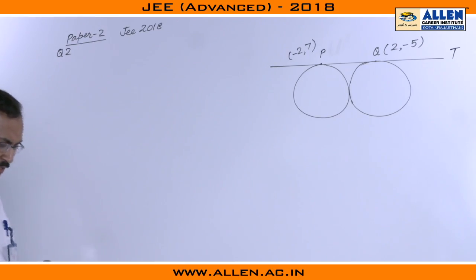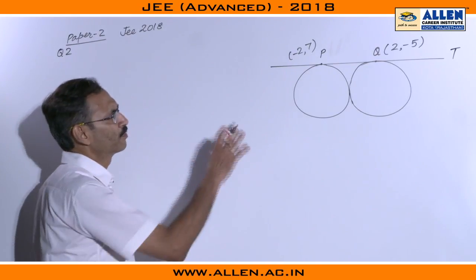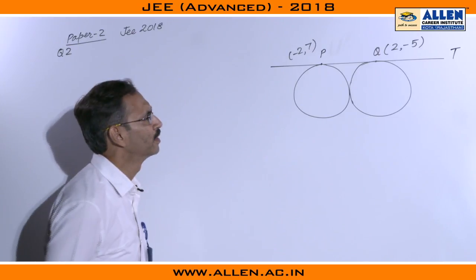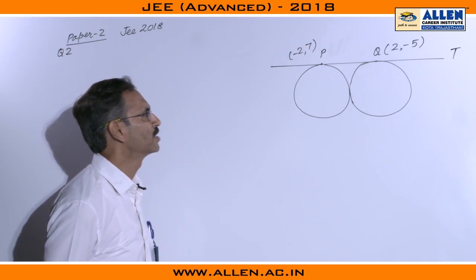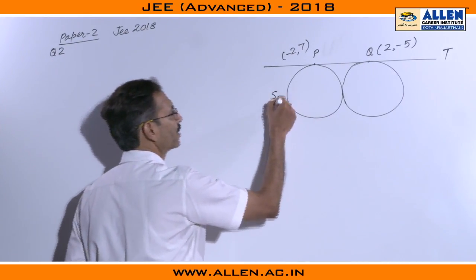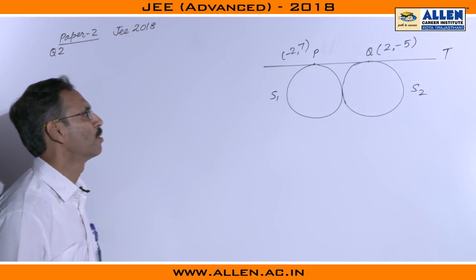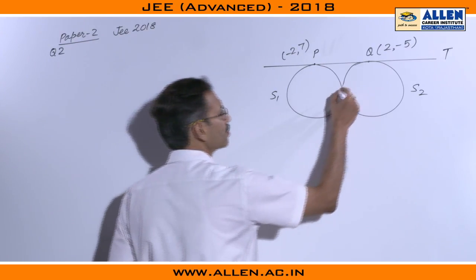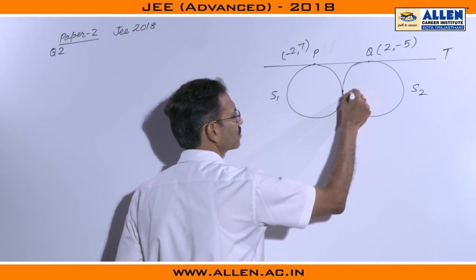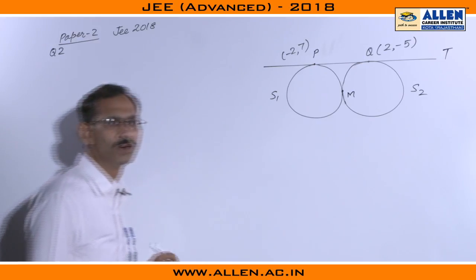Question number 2 is a very nice problem of coordinate geometry. We have been given a straight line T and there are two variable circles S1 and S2 touching the line at P and Q. P is minus 2 comma 7 and Q is 2 comma minus 5. M is the point of contact of these two circles. We have to find out the locus of M.